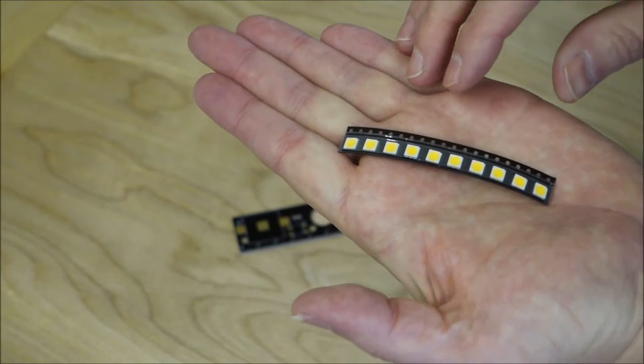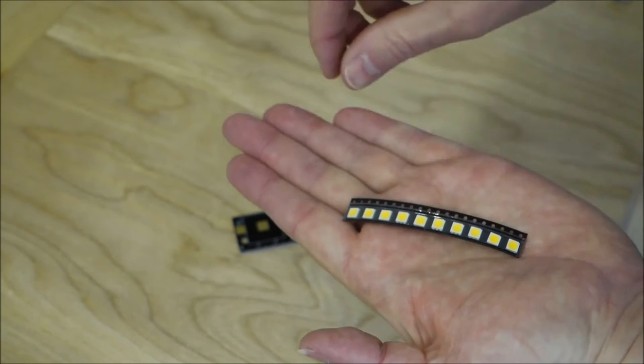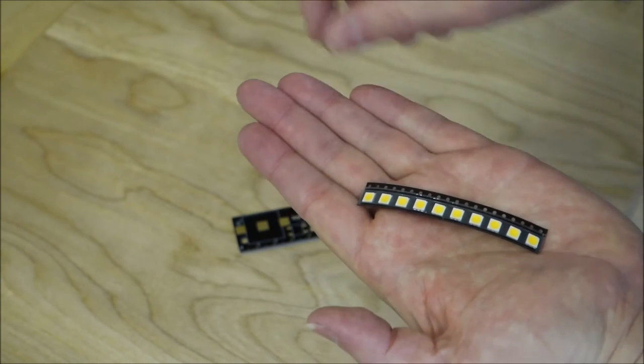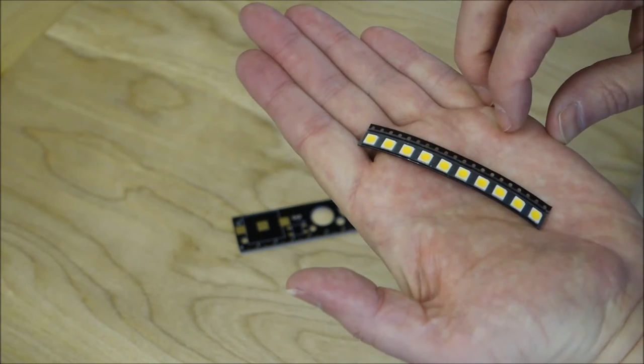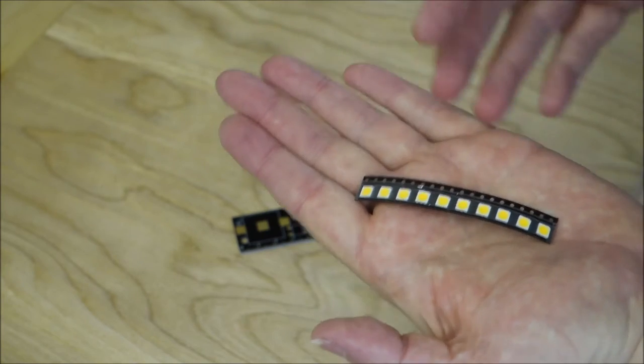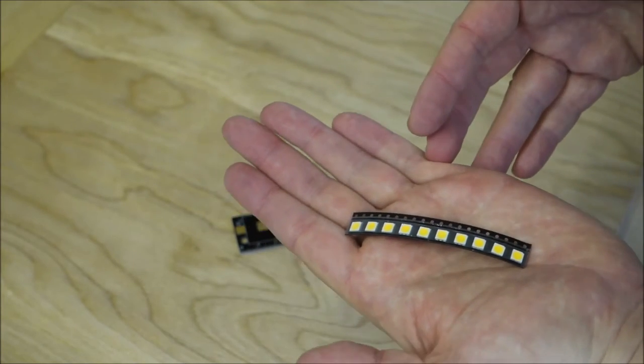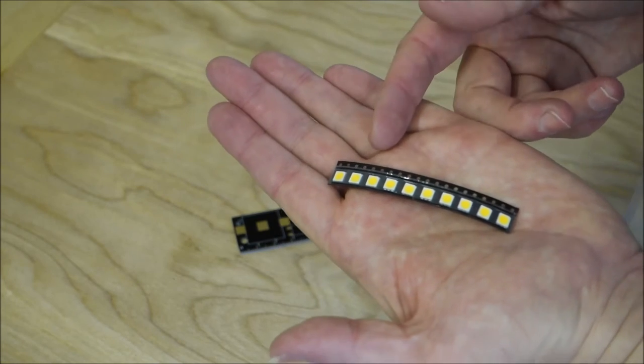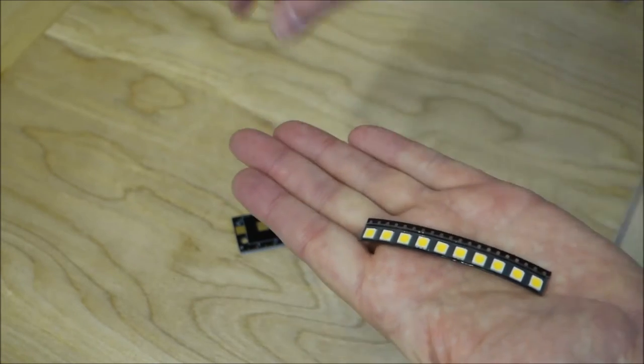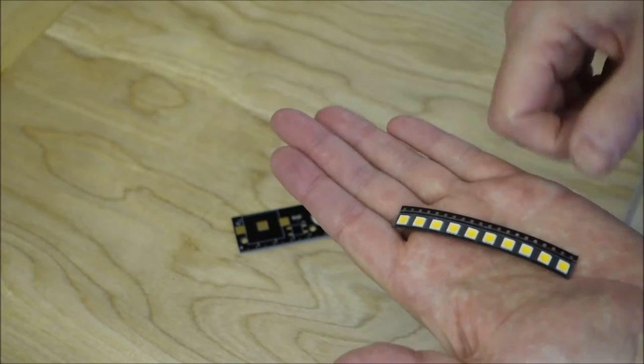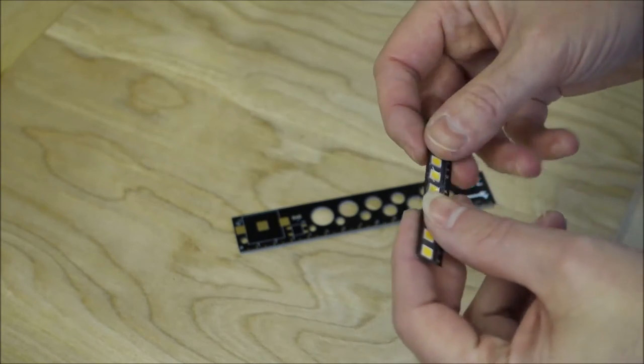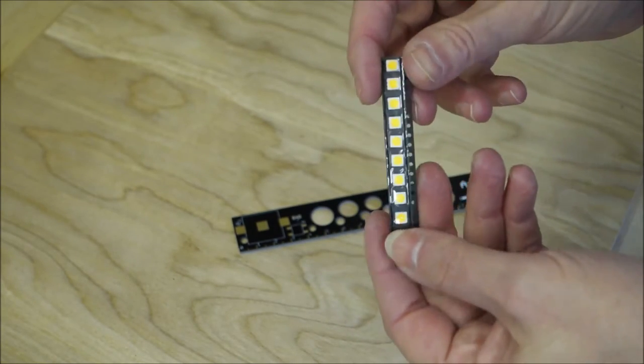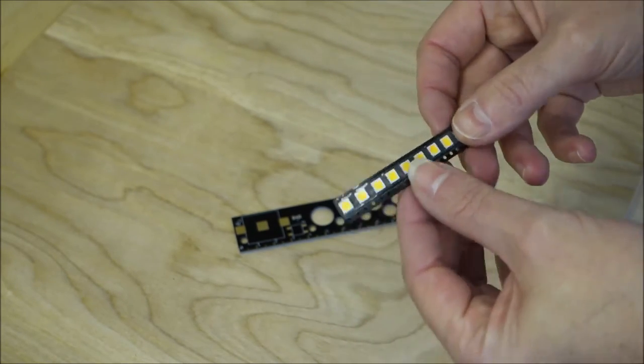The machine will pick out the components one by one with a little robotic arm and put them on the circuit board. You might have LEDs, resistors, capacitors, diodes, whatever components, and they'll come on rolls like this and basically get picked out, put onto the circuit board, and then soldered in place.